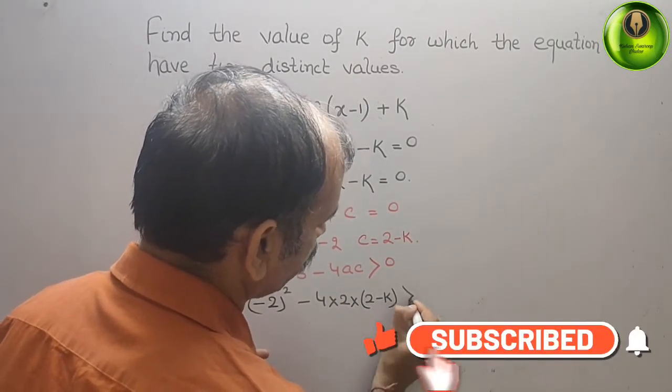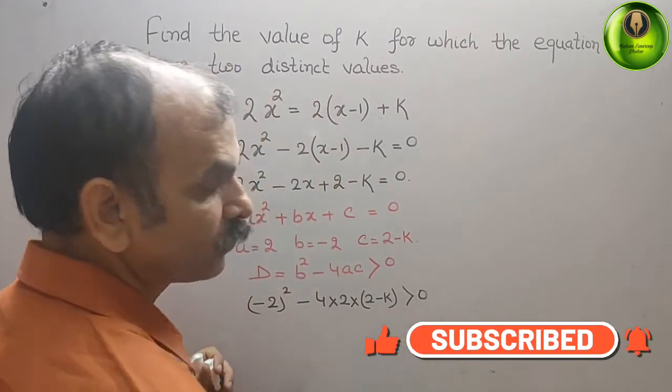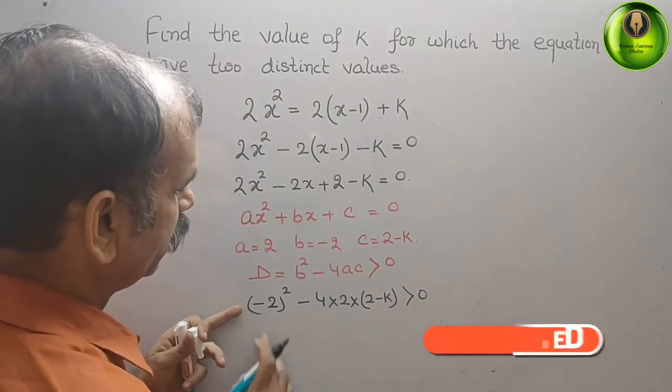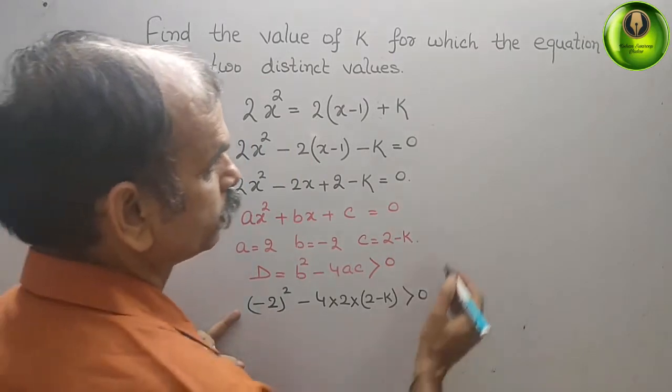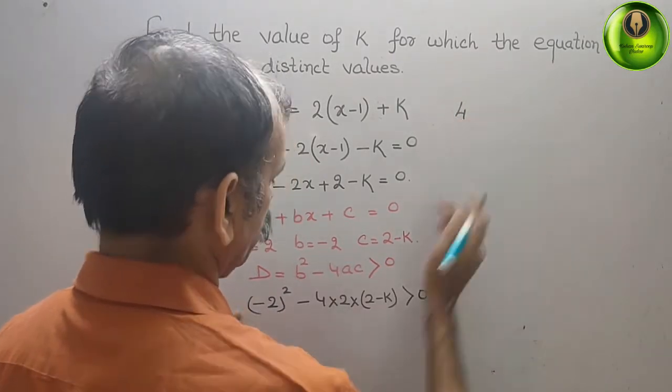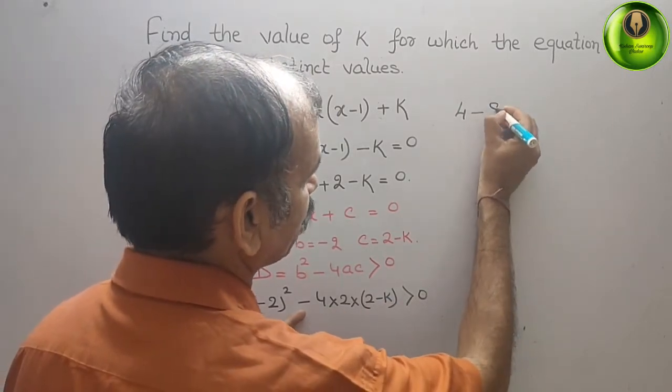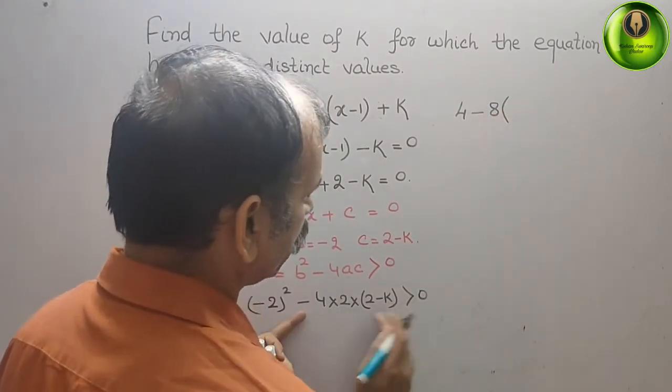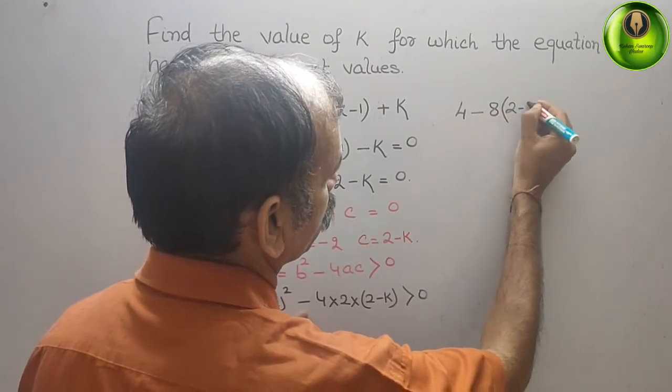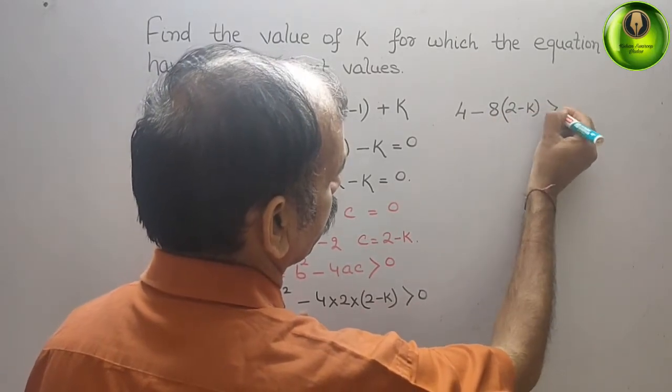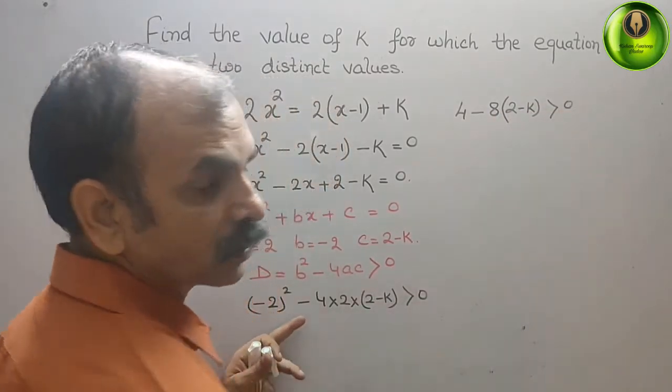It should be greater than 0. Now solve this. What we will get: (-2)² is 4, now -8(2-k) is greater than 0.